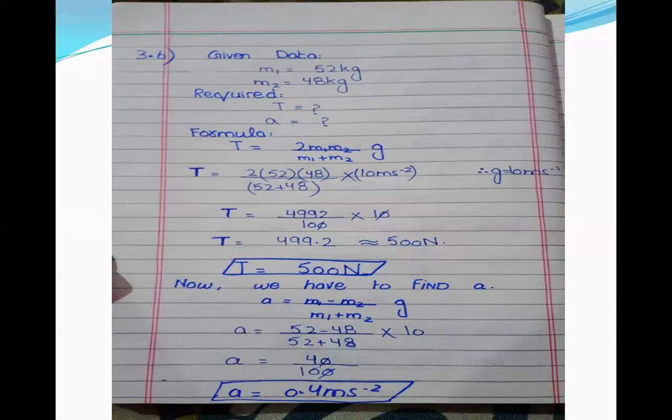Now we find acceleration. The formula for acceleration, also from textbook page 65, is: a equals (m1 minus m2) divided by (m1 plus m2), multiplied by g. Putting in the values of m1 and m2 and simplifying, the acceleration is 0.4 meters per second squared. This is numerical 3.6.